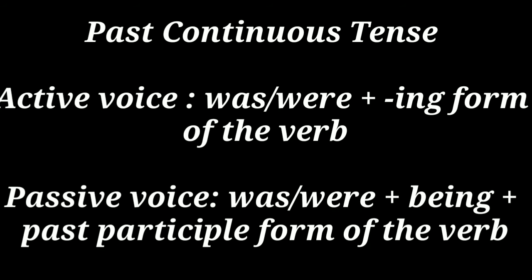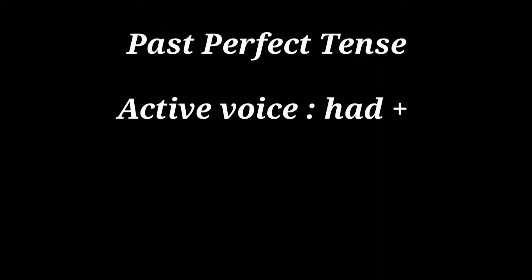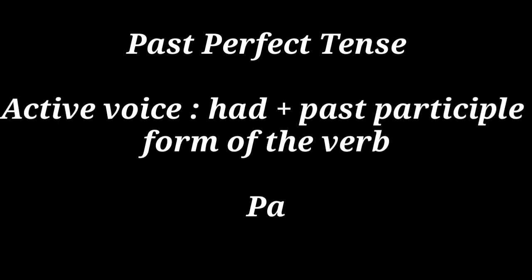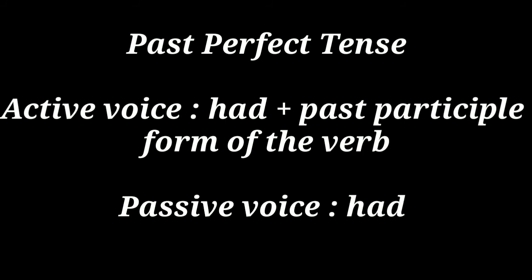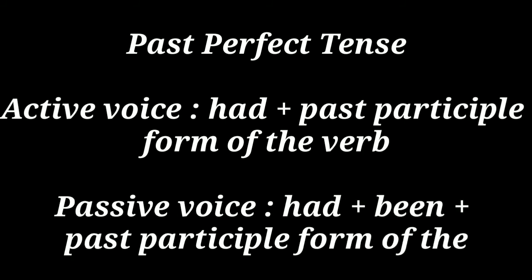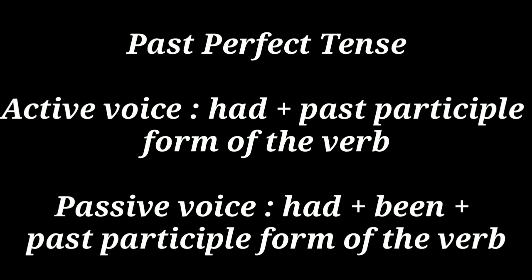In past perfect tense, in active voice we write 'had' plus the past participle form of the verb. For example: 'She had completed the work.' In passive voice we write 'had' plus 'been' plus the past participle form of the verb. For example: 'The work had been completed by her.'